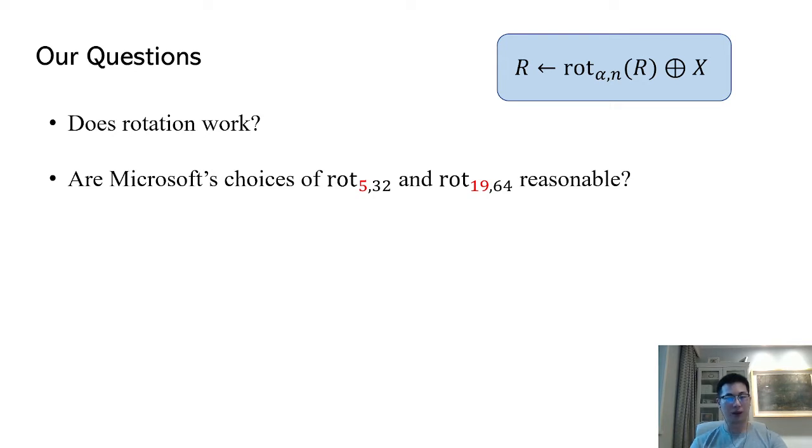If rotation works, then we want to know how Microsoft selected those mysterious rotation numbers alpha. In particular, are Microsoft's choice of rotation numbers, 5 for the 32-bit CPU and 19 for the 64-bit CPU, reasonable?